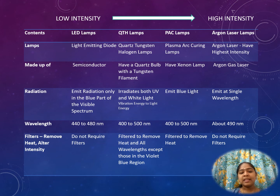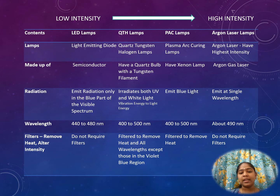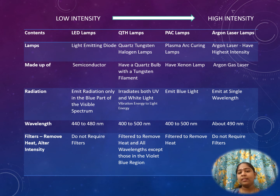Regarding radiation: LEDs emit radiation only in the blue part of the visible spectrum. QTH irradiates both UV and white light, involving conversion of vibrational energy to light energy. PAC lamps emit blue light only. Argon laser lamps emit at a single wavelength of 490 nanometers. Wavelength ranges: 440 to 480 nanometers for LEDs; 400 to 500 nanometers for QTH; 400 to 500 nanometers for PAC; and about 490 nanometers, a single wavelength, for argon laser.